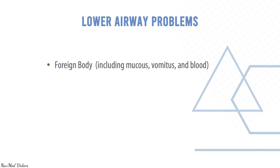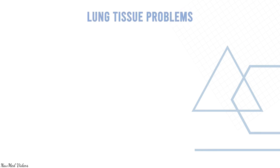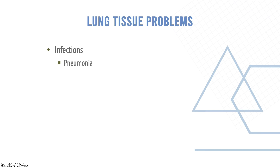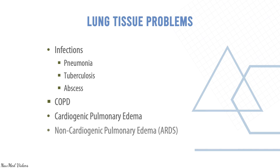Lower airway problems include foreign body (including mucous plugs and blood), tumors, asthma, and COPD. Lung tissue problems include infections like pneumonia, TB, and abscesses, COPD, cardiogenic edema, or non-cardiogenic pulmonary edema such as in acute respiratory distress syndrome.